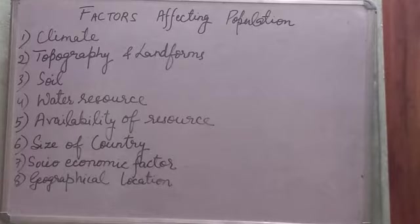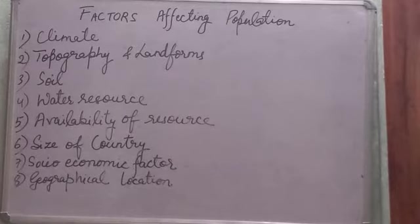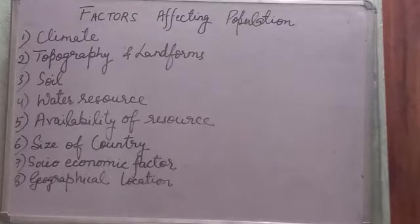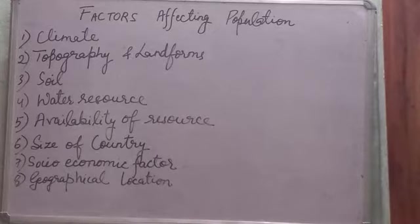Availability of resources — including mining and agriculturally developed regions — leads to industrial development. Examples include the Chotanagpur Plateau of India, the Ruhr region in Germany, and regions in the UK, which are all well-developed regions.